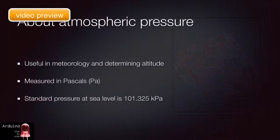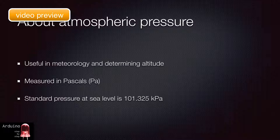Simply speaking, atmospheric pressure is the weight of the air above an object. As the height of a column of air above an object changes depending on its altitude, so does the weight of that column. Atmospheric pressure at the surface of the sea is higher than that on the top of a tall mountain.